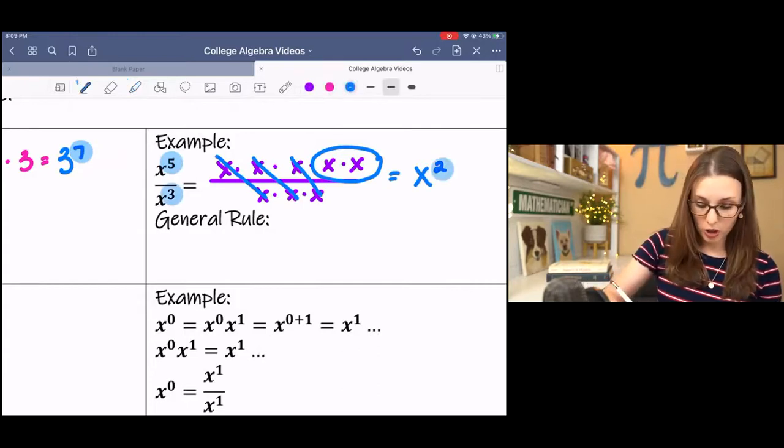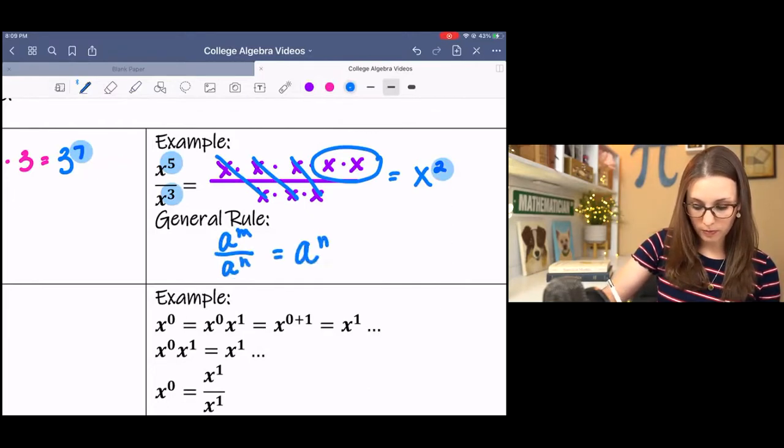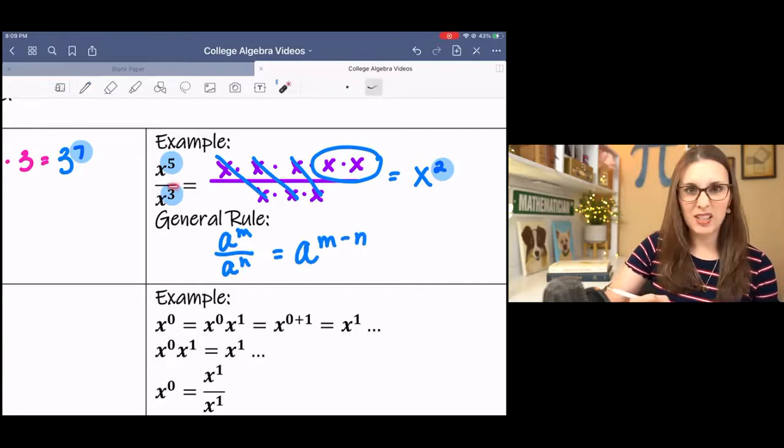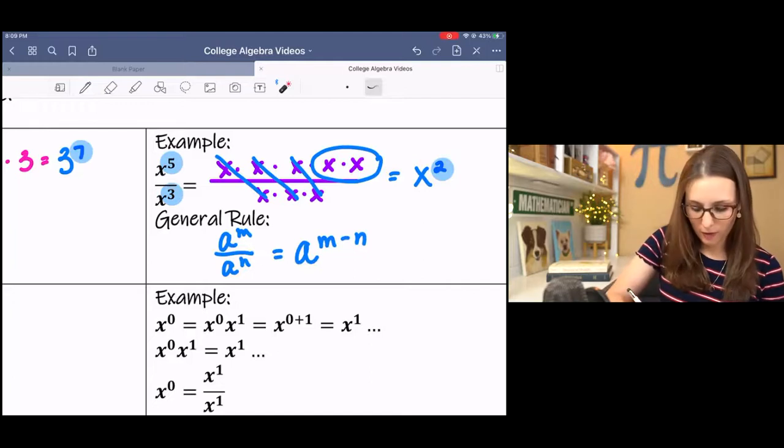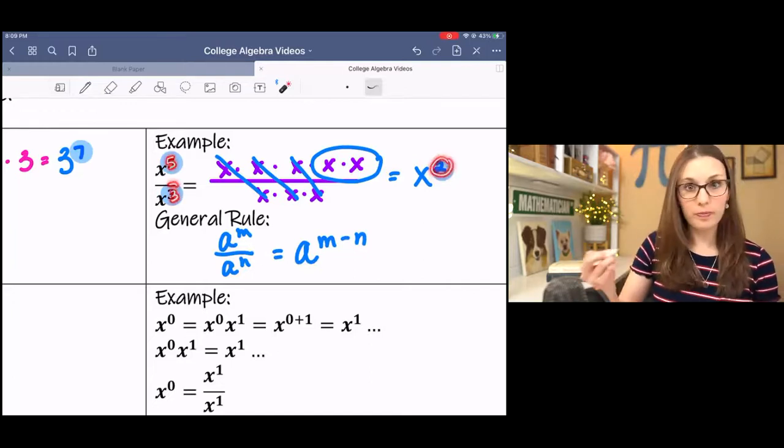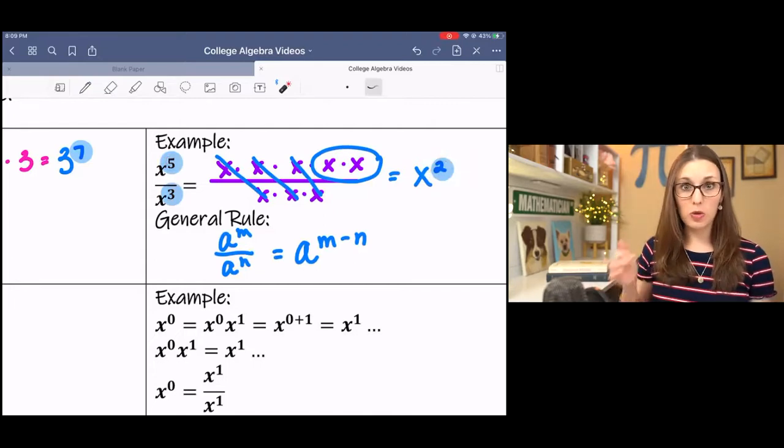So division translates to subtraction. I kind of like to think of the division sign as a minus sign. It's not at all, but it's a good memory device. 5 minus 3 is 2. So division is subtraction.